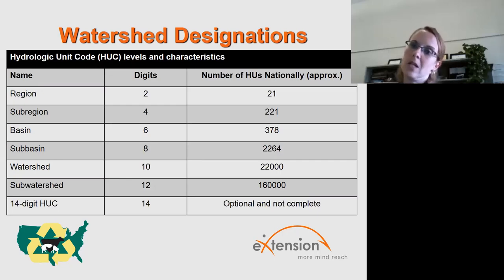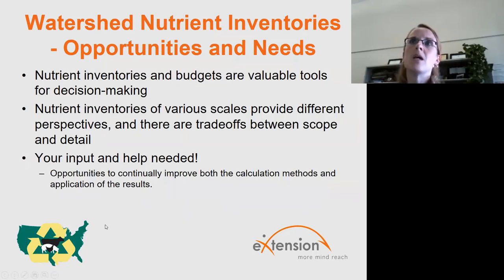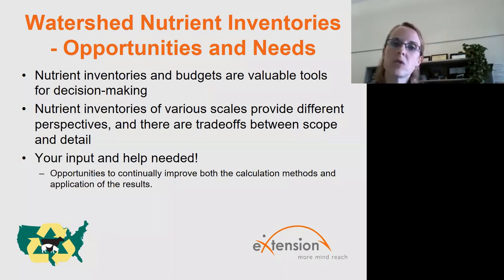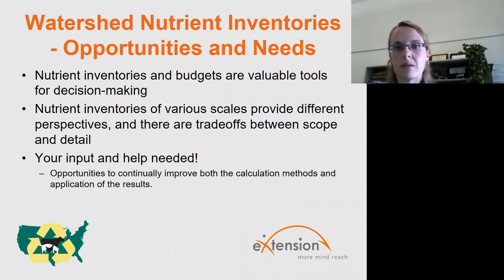As you can see, there are a lot of them in the country, and how can we use some of these different approaches to address questions and decision making at different levels? Today is talking about nutrient inventories and these budgets — they are valuable tools for decision making. There are of course different scales at which these decisions and inventories can be made, providing different perspectives. The presenters today are going to demonstrate some of those trade-offs between scope and detail.